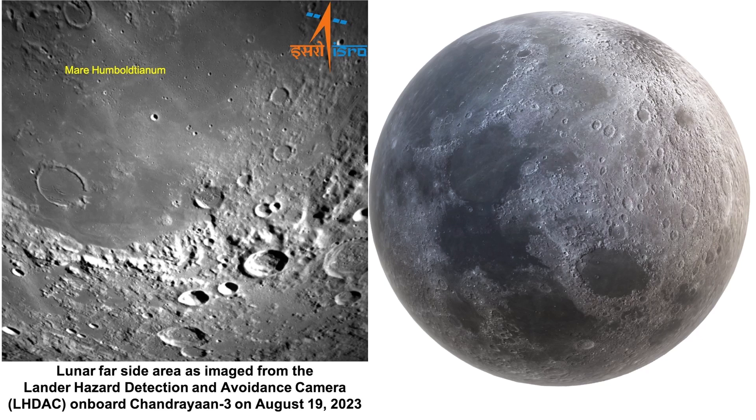A mascon is a gravitational anomaly or concentration of mass beneath the surface, causing variation in the gravitational field of the surface. Interestingly, Mare Humboldtianum bridges the gap between the near and far sides of the moon.